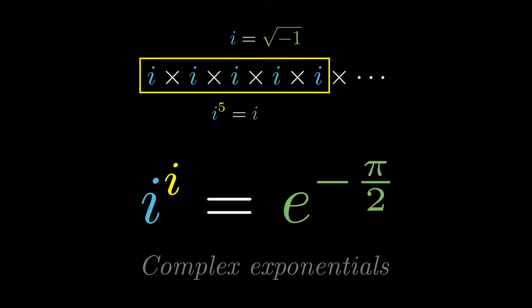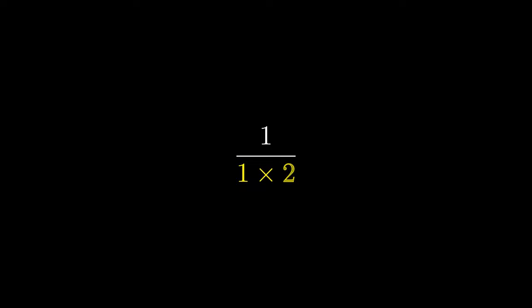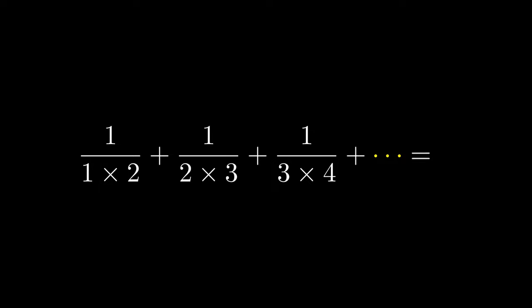Returning to less complex and more real ideas, let's start with 1 divided by 1 times 2, add 1 divided by 2 times 3, add 1 divided by 3 times 4, so on and so forth. What does this equal? You might need to use some partial fractions and a telescoping series to help you, but the answer simplifies to 1.